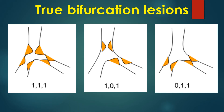True bifurcation lesions are those belonging to the Medina classes 1,1,1; 1,0,1; and 0,1,1 — where both the main branch and side branch are significantly narrowed.